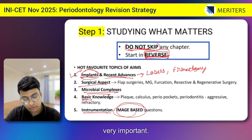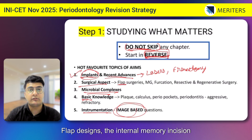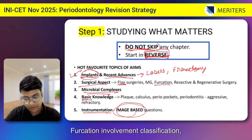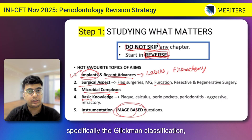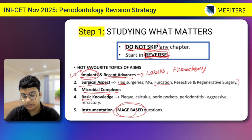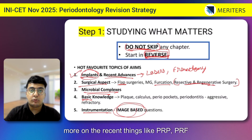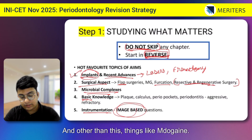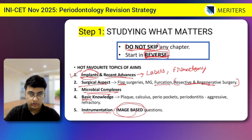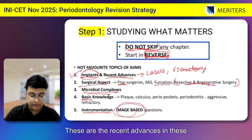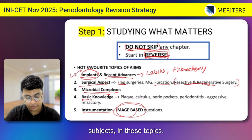The surgical aspect is also very important: flap designs, the internal bevel incision, furcation involvement classification — specifically the Glickman classification — and resective and regenerative osseous surgeries. In this area, they focus more on newer advances and recent things like PRP, PRF, and MDO gain. They are also going to ask about enamel matrix derivatives, which are the recent advances in these topics.